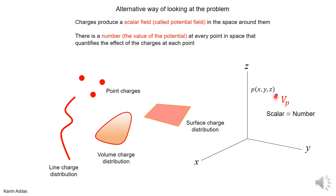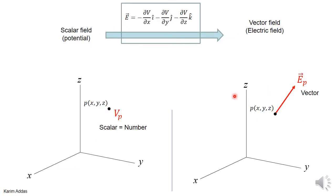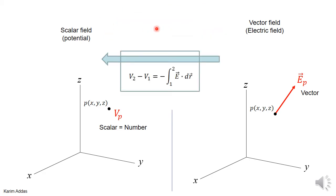We found an alternative way to describe the effect of charges in space: not by giving a vector at every point, but by giving a number — this number is called the potential. We also found a way to relate the two descriptions. We can go from the potential point of view to the electric field point of view by simple differentiation. If you know the potential V everywhere in space, you can get E.